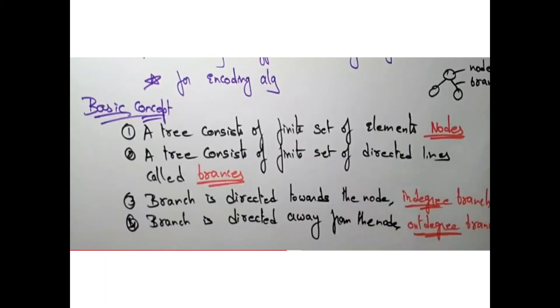Basic concept: a tree consists of a finite set of elements called nodes, and a tree consists of a finite set of directed lines called branches. A branch is directed towards the node, which is in-degree. A branch is directed away from the node, that is called out-degree.